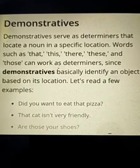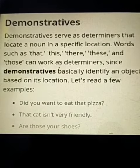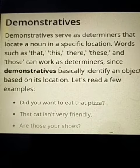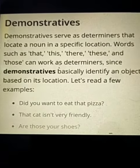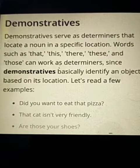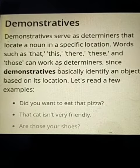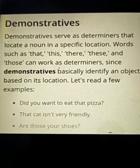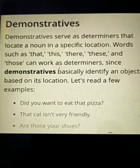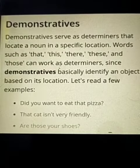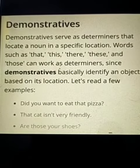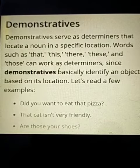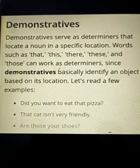Now let's understand about demonstratives. Demonstratives serve as determiners that locate a noun in a specific location. Words such as that, this, there, these and those can work as determiners. Since demonstratives basically identify an object based on its location, let's read a few examples: 'Did you want to eat that pizza?' 'That cat is not very friendly.' 'Are those your shoes?' etc.